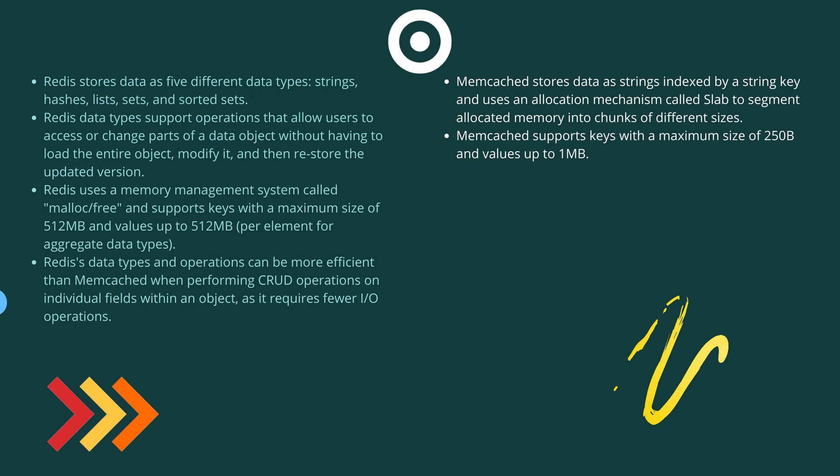Redis stores data as five different data types: strings, hashes, lists, sets, and sorted sets. Redis data type support operations that allow users to access or change parts of a data object without having to load the entire object. Redis uses keys which support a maximum size of 512 MB and values up to 512 MB. On the other hand, Memcache stores data as strings indexed by a string key and uses an allocation mechanism called slab. Memcache supports keys with a maximum size of 250 bytes and values up to 1 MB.